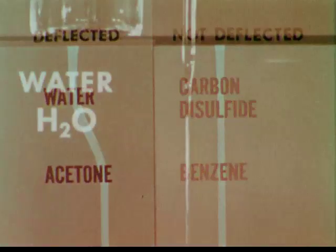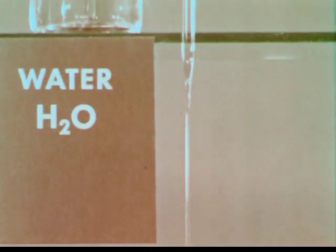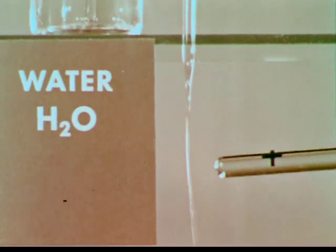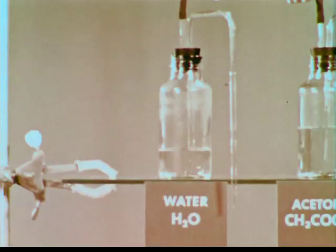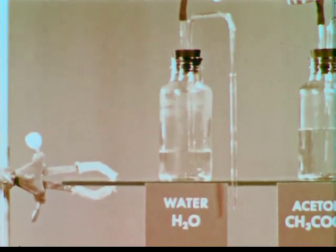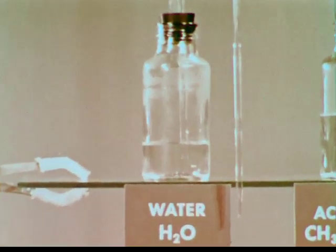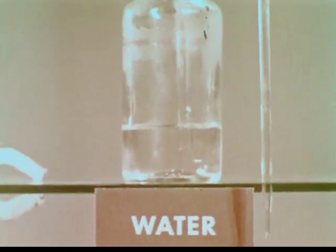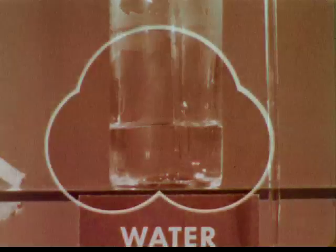How can water, for example, act in one case as if it has a positive charge, and in another case as if it has a negative charge? To answer this question, let's see if we can construct a model or concept on the molecular level that accounts for the deflection or lack of deflection in these experiments. As a first step, let's consider the structure of water on the molecular level.